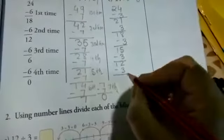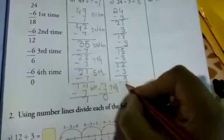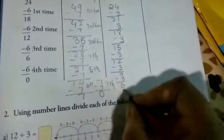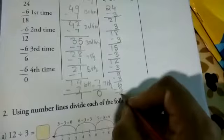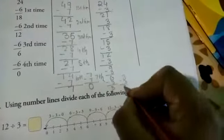9, 9 minus 3 is 6, 6 minus 3 is 3, 3 minus 3 equals 0.